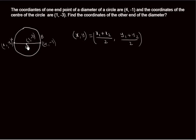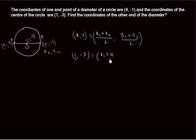Here (x, y) is the midpoint, found as (x1 + x2) / 2 comma (y1 + y2) / 2. So (1, -3) is the midpoint. Let's take the known end (4, -1) as (x2, y2). Then: 1 = (x1 + 4) / 2 and -3 = (y1 + (-1)) / 2.